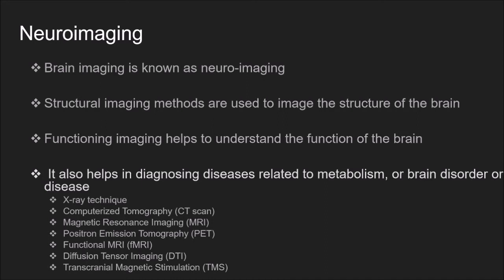There are different types of neuroimaging: X-ray technique, computerized tomography or CT scan, magnetic resonance imaging or MRI, positron emission tomography or PET, functional MRI, diffusion tensor imaging, and transcranial magnetic stimulation or TMS. Let us see each one in the upcoming slides.